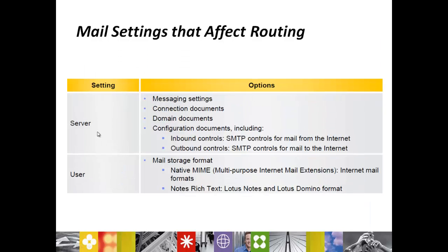Mail settings that affect the router. You have two levels of settings — server and user — which affect the mail routing process. At the server level, proper messaging setting documents, connection documents, Domino domain documents, and configuration documents including inbound and outbound controls are major keys in the mail routing process. At the user level, you should have a mail storage format — the native mail storage format is MIME and internet formats, plus Notes rich text format for the Lotus Notes and Domino environment. Mail sent to the internet will use MIME format.